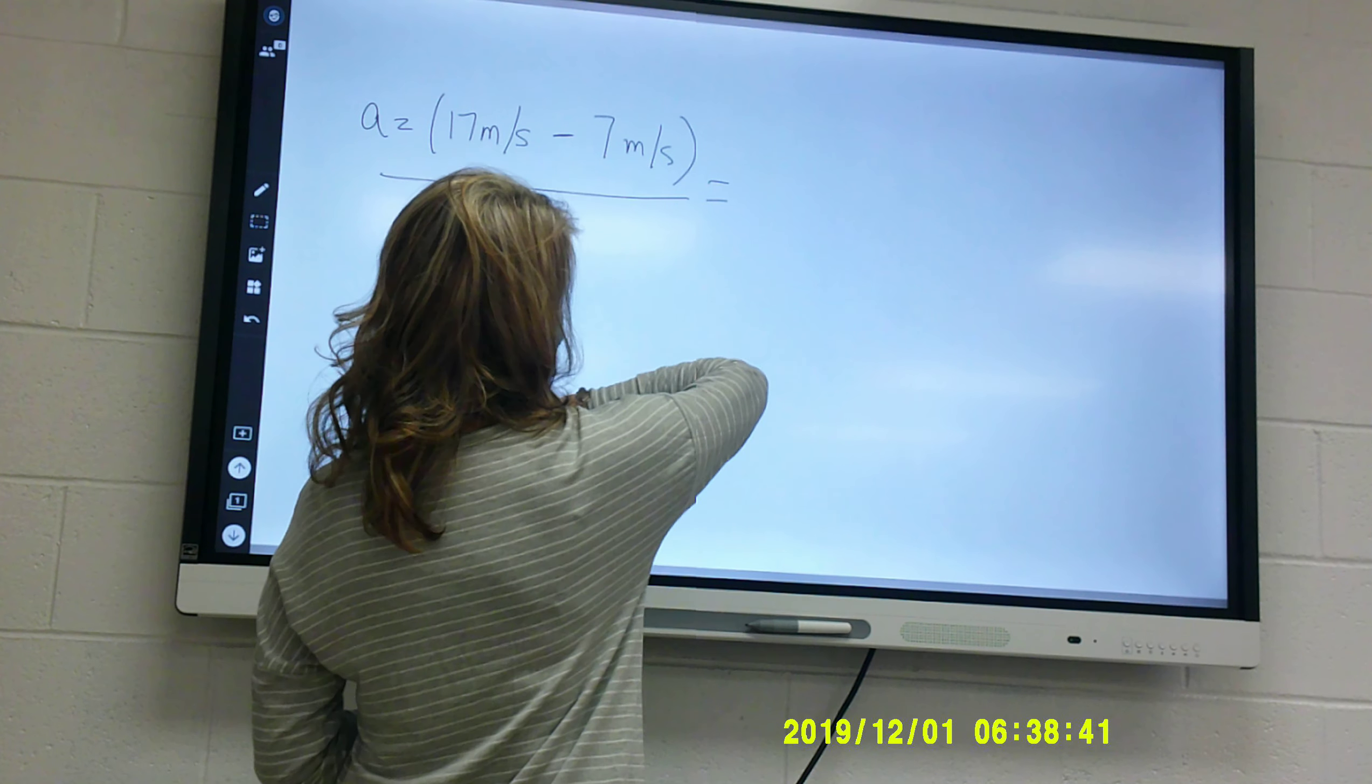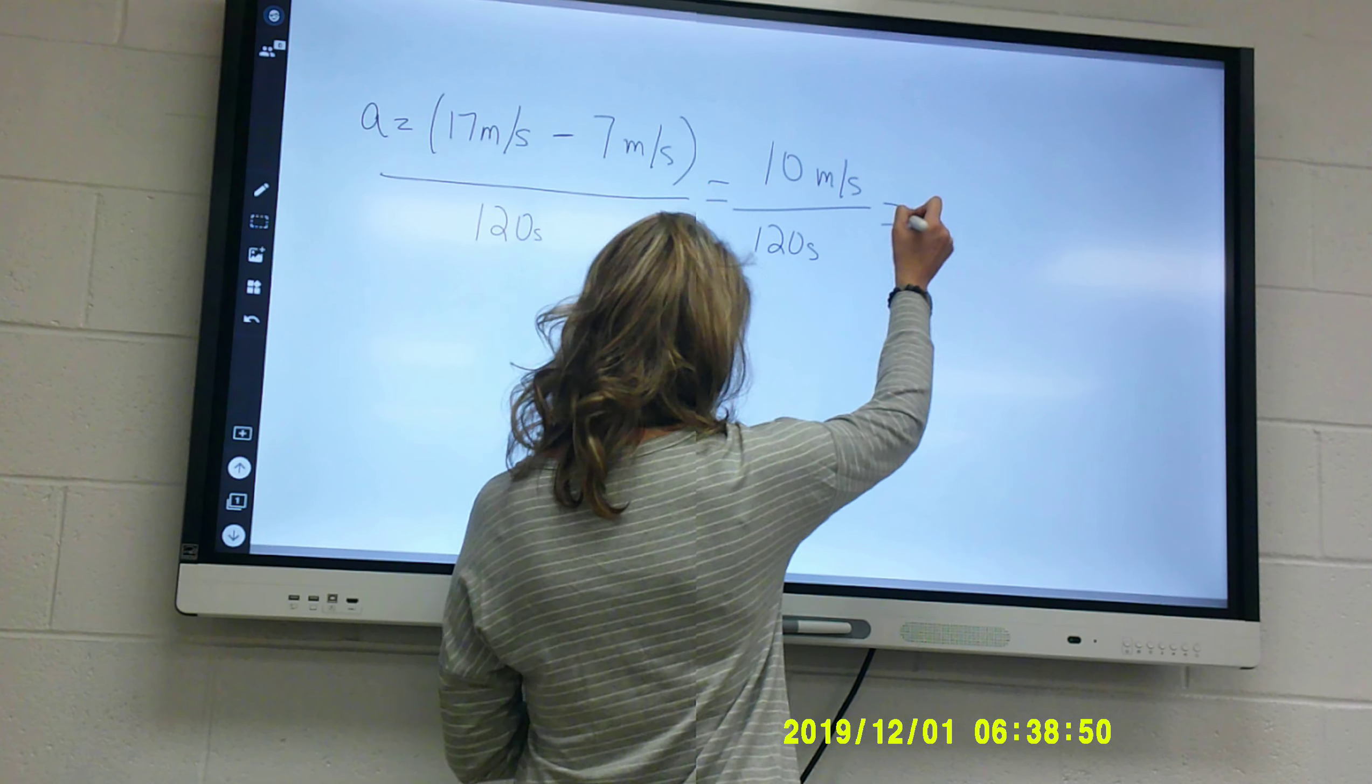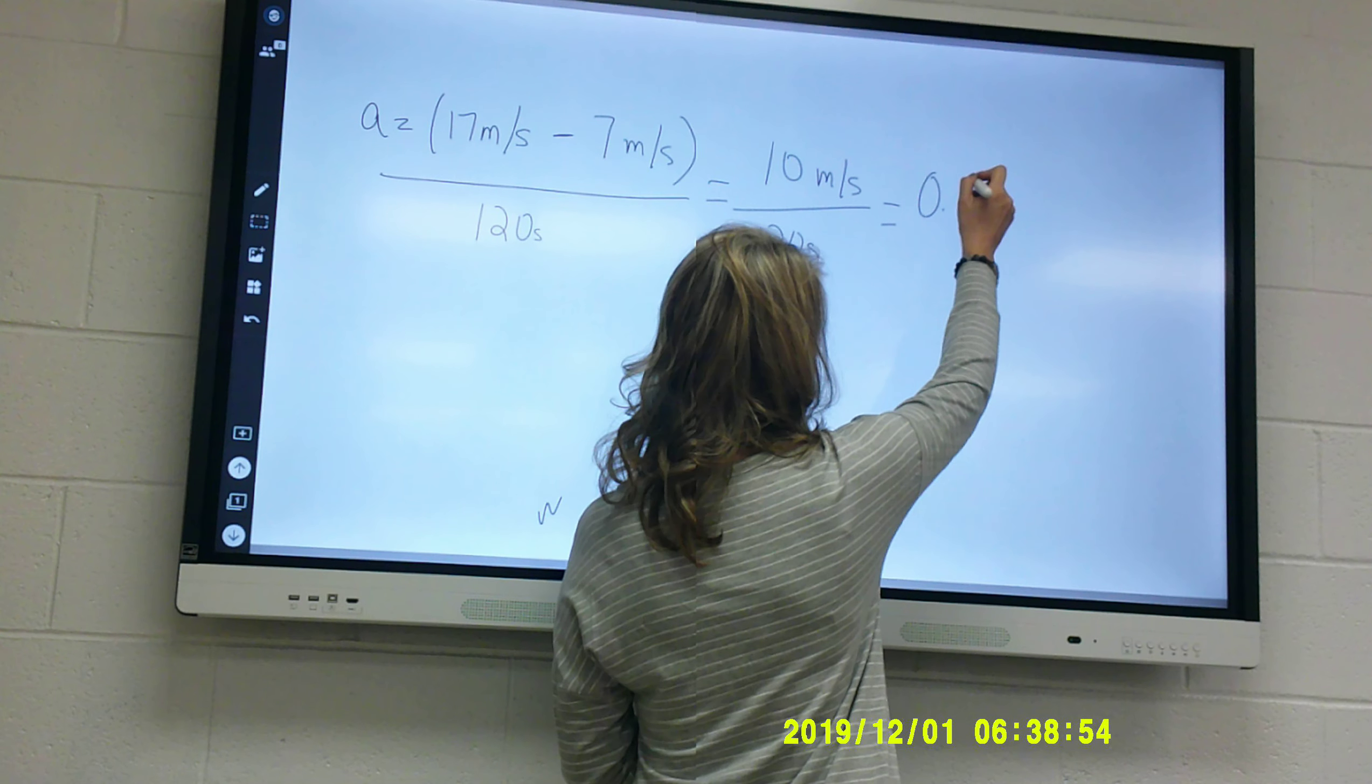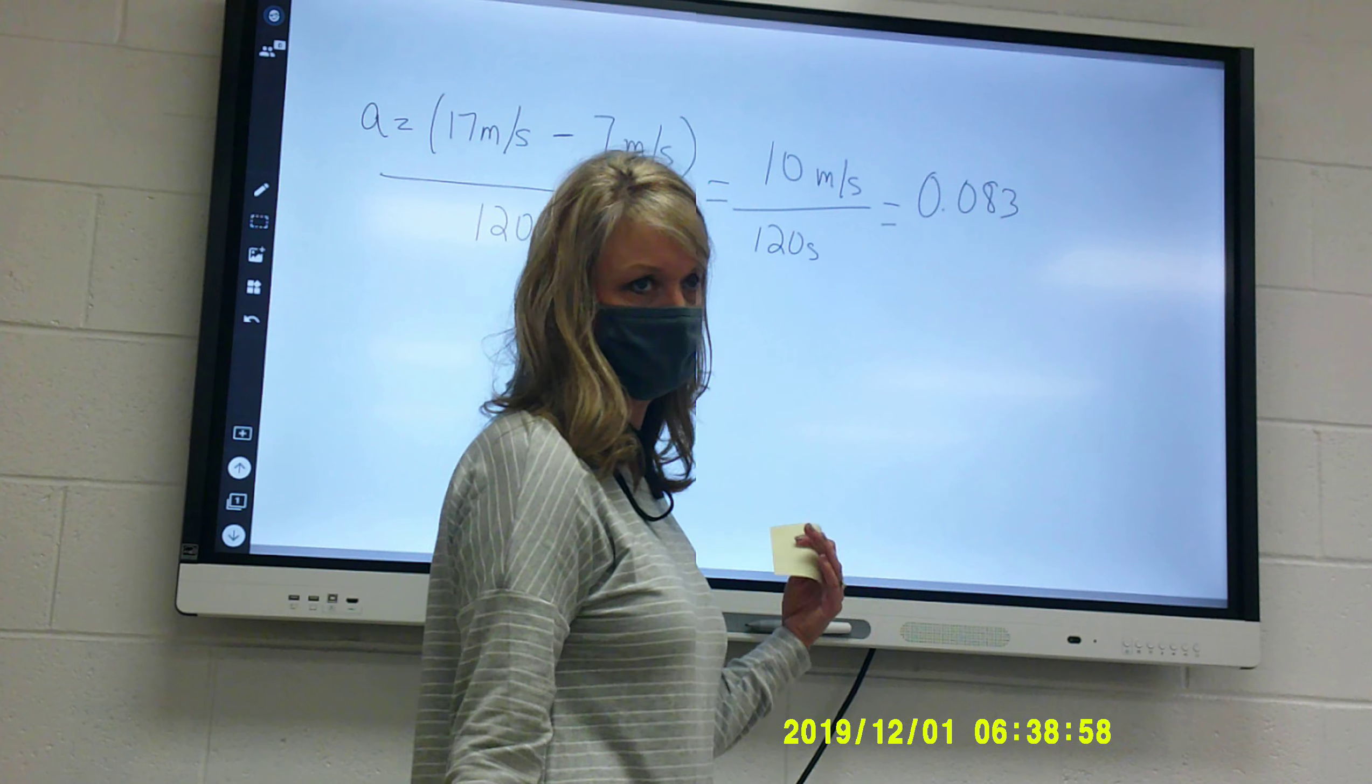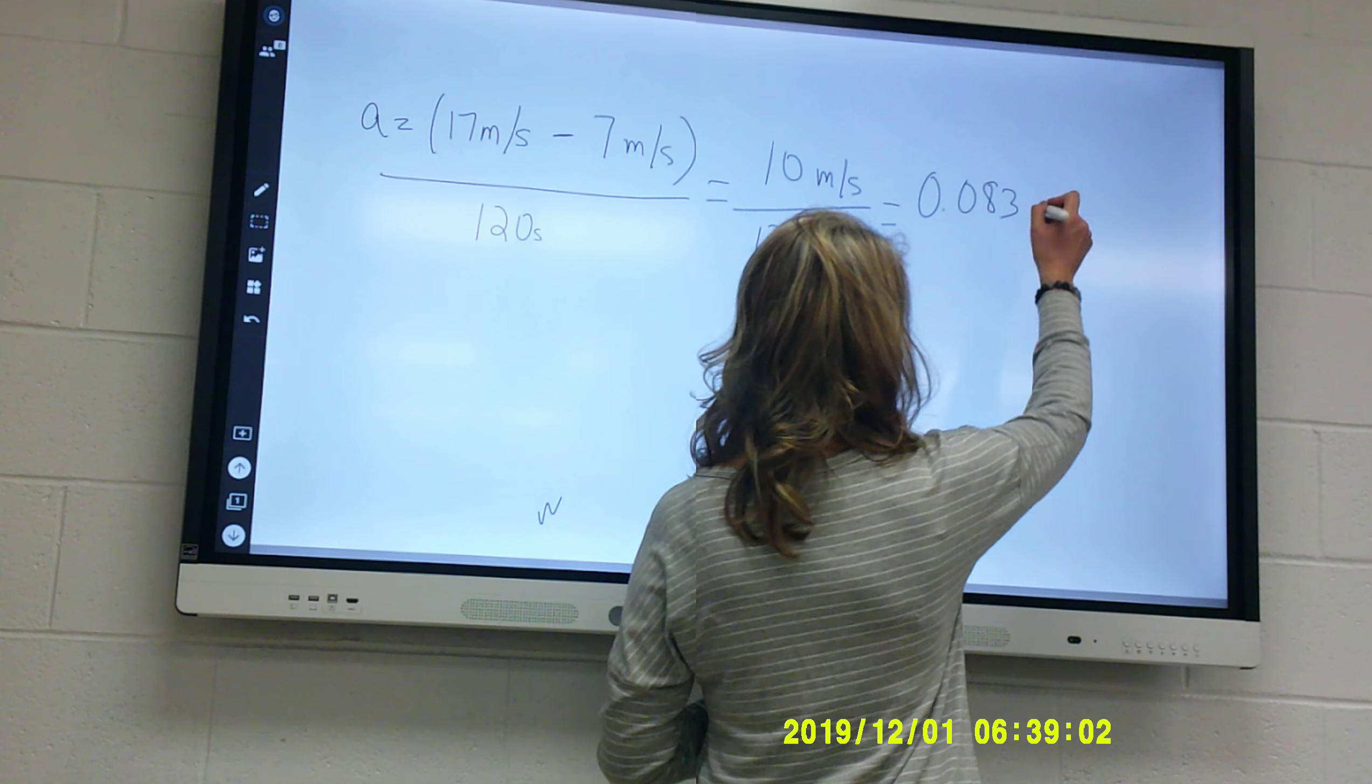So what's 17 minus 7? Zero point. No, what's 17 minus 7? 10. 10 meters per second divided by 120 seconds is going to give me 0.083, and I think it's 3, 3, 3, 3, 3.